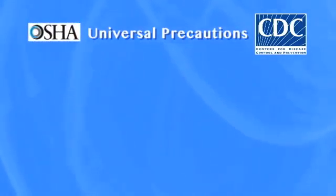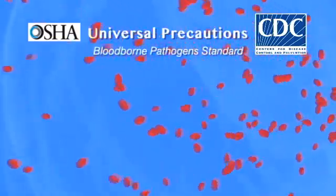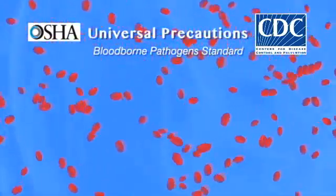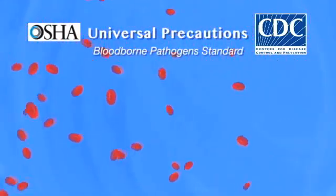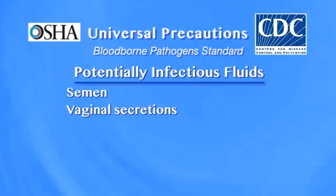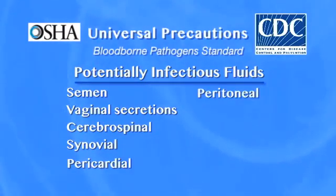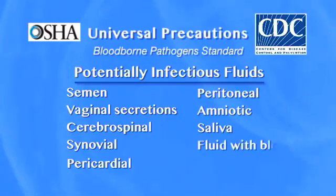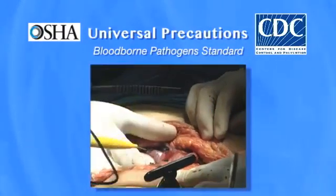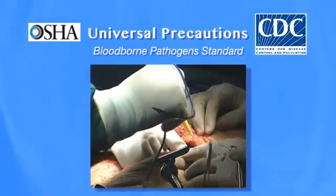OSHA adopted Universal Precautions in its Bloodborne Pathogens Standards as the approach for preventing the transmission of bloodborne pathogens. It further defined potentially infectious fluids as semen, vaginal secretions, cerebrospinal, synovial, pericardial, peritoneal, or amniotic fluids, saliva in dental procedures, or any fluid with blood. In addition, this agency added that any unfixed tissue or organ other than intact skin should be considered infectious.